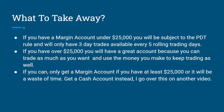What to take away from margin accounts: if you have a margin account under $25,000, you will be subject to the PDT rule and will only have three day trades available every five rolling trading days. If you have over $25,000, you can trade as much as you want with instant settlements. Since you can only really benefit from a margin account if you have at least $25,000, it'll save you lots of time — you won't have to wait for your trades to replenish.